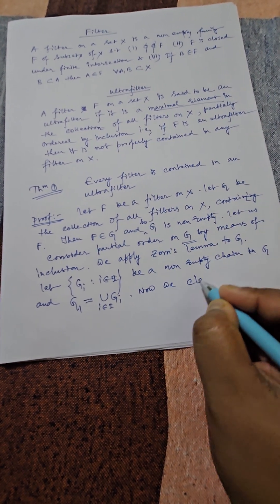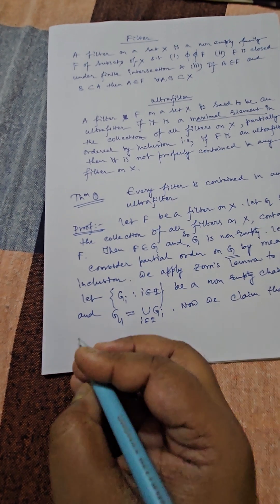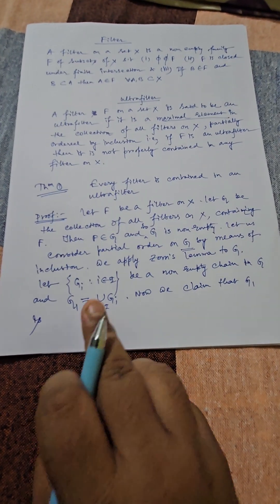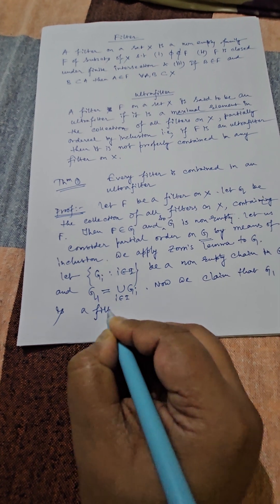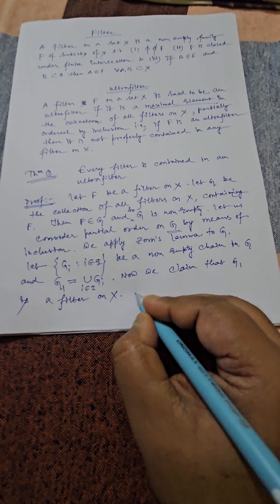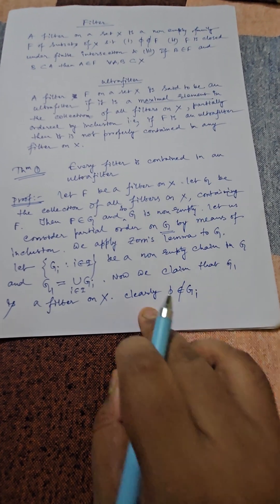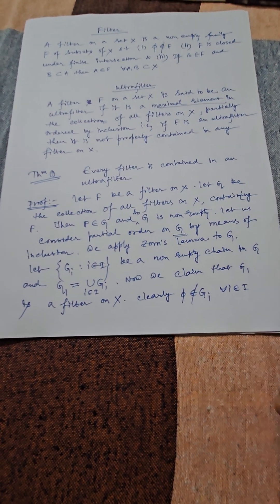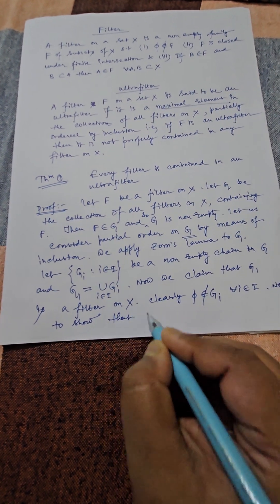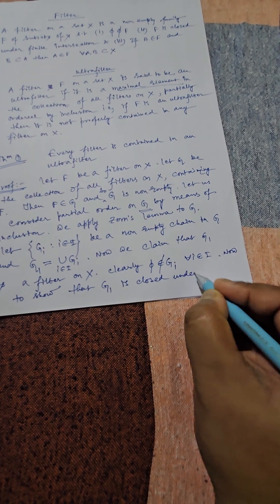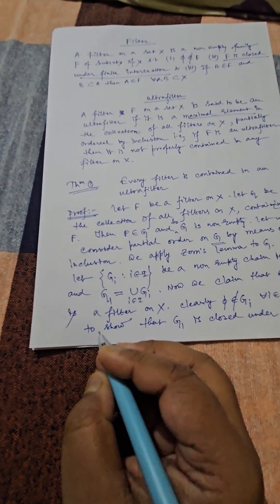We claim that G1 = ∪G_i is a filter on X. Clearly, the empty set does not belong to G1, since it does not belong to G_i for any i ∈ I. To show that G1 is closed under finite intersection, it is sufficient to show that the intersection of any two members of G1 is again in G1.